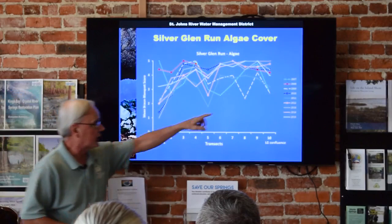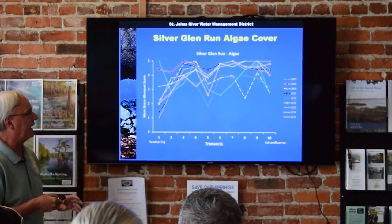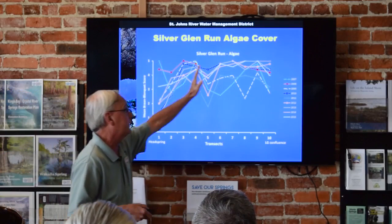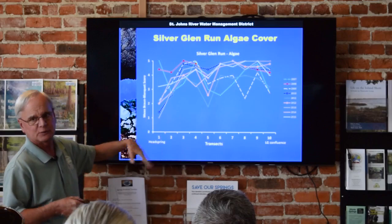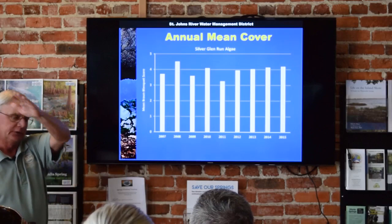For algae cover, we actually have a couple of extra years of data because a contractor initially set this monitoring network up before we continued it in-house. With nine years of data now the graph is almost uninterpretable, but basically algae cover is pretty high throughout the spring run, tailing off at those head spring transects because of physical disturbance from recreational use. If you collapse the transects to an annual mean, you can see no real trend — algae cover is just staying high in Silver Glen Run.